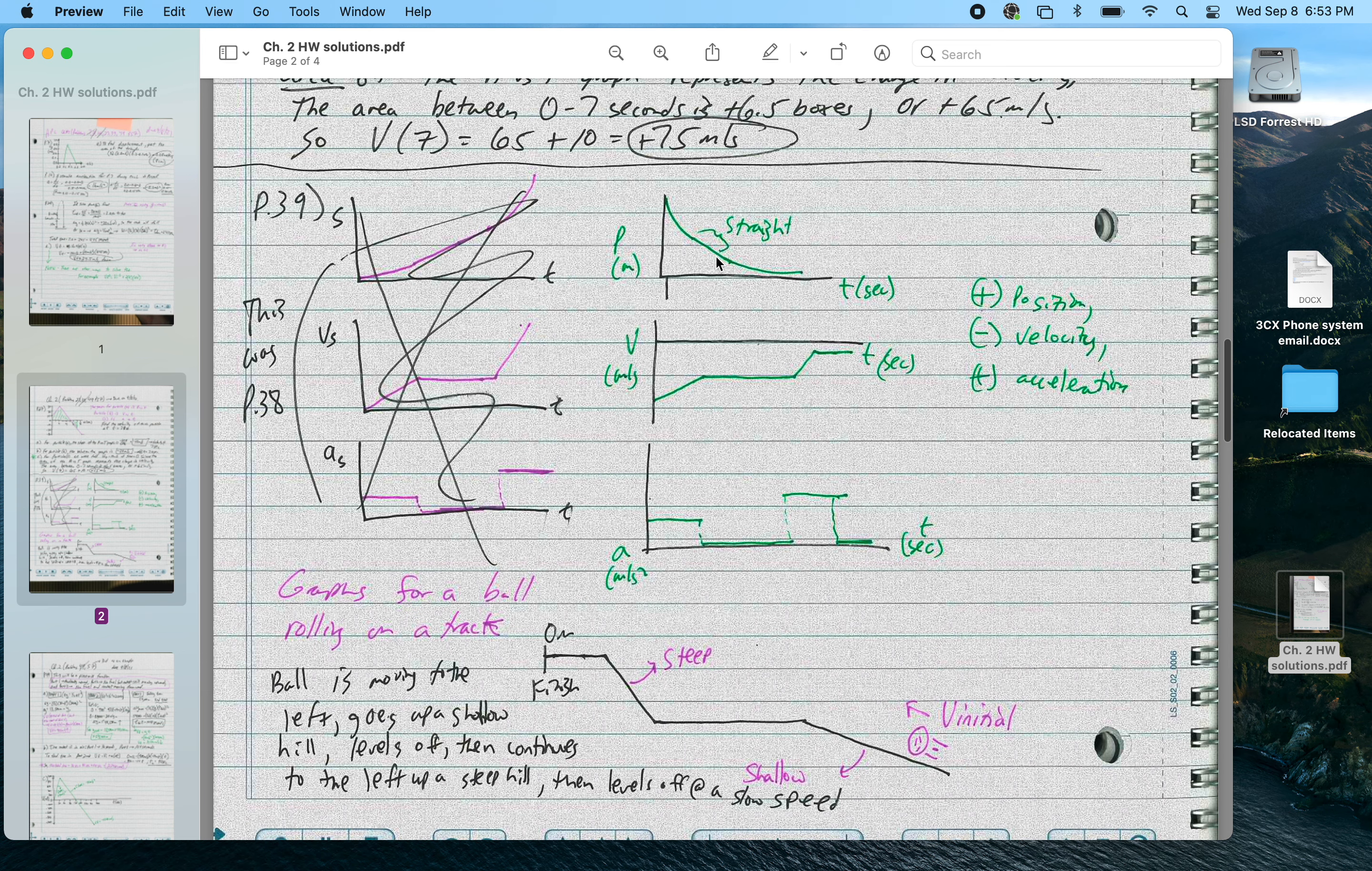For P39, I've got these three graphs, and I was asked to draw a situation of a ball rolling on a ramp or something like that. So initially, it's going to the left, it's moving upward because I've got a negative velocity, but that velocity is increasing towards 0, so the ball's slowing down, so it's an upward ramp.